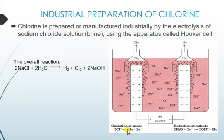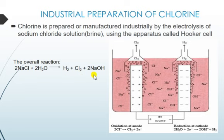The reaction at the anode: two chloride ions give chlorine gas plus two electrons. At the cathode: two moles of water react with two electrons to give hydroxide ions and hydrogen gas. The overall reaction: sodium chloride reacts with water to give hydrogen gas, chlorine gas, and sodium hydroxide.